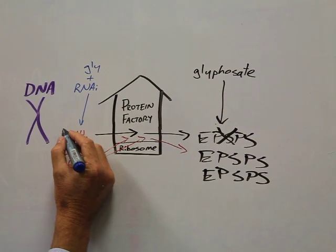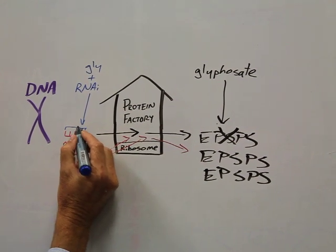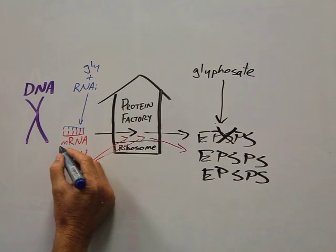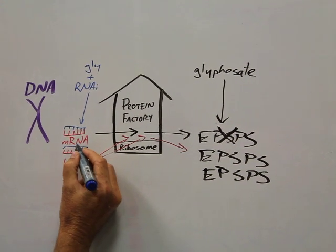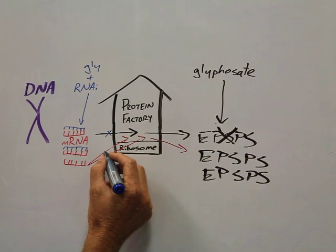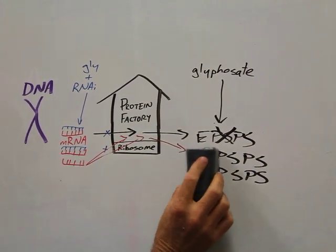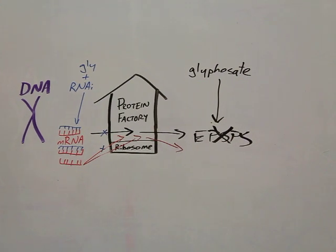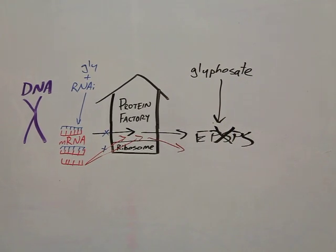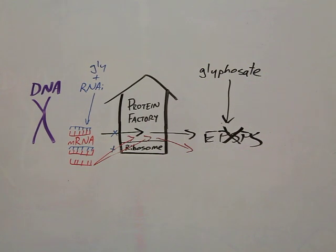They're taken up by the plant and bind to these messenger RNA fragments, taking out some of that. So the message no longer gets to the protein factory to produce the enzyme, the overproduction of enzyme doesn't happen, and the glyphosate can bind to the susceptible EPSPS enzyme and the plant dies.